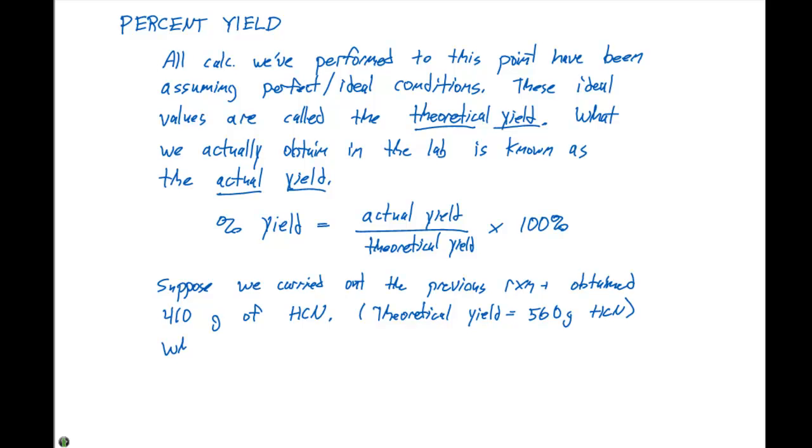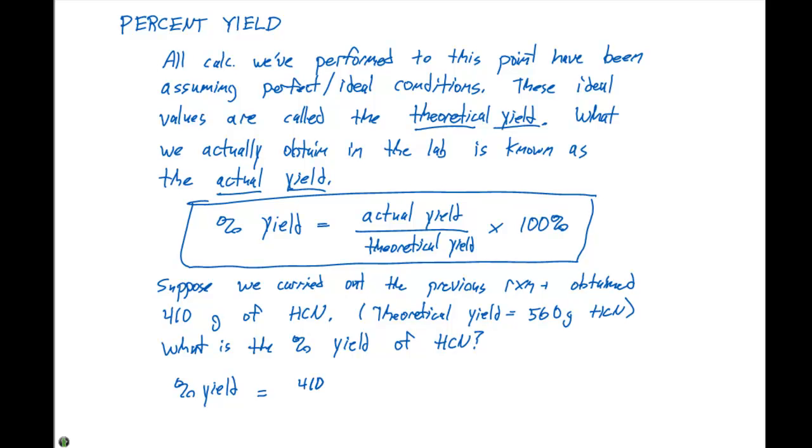What is the percent yield of HCN? Our percent yield, using the formula in this box, is equal to the actual yield, which was 410 grams of HCN, divided by the theoretical yield, which is 560 grams of HCN, times 100%.